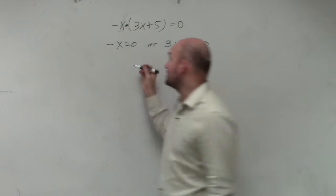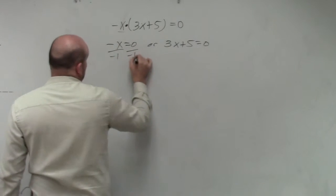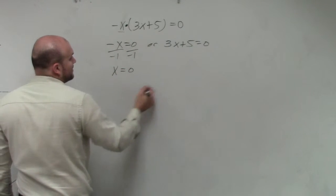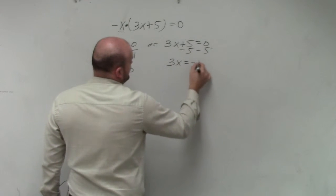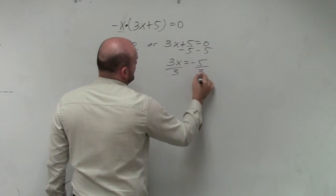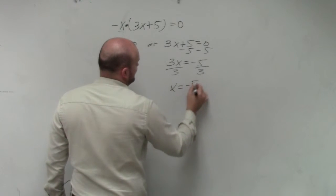Now you just go ahead and solve for x. So in this case, you divide by negative 1, x equals 0. This case, you need to subtract 5 on both sides. 3x equals negative 5. Divide by 3, x equals negative 5 thirds.